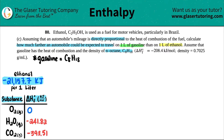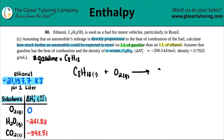We have to start from the beginning and do the same process for gasoline, C8H18. First, find the ΔH of combustion by writing a balanced equation. So: C8H18 liquid plus O2 gas forms the combustion products CO2 gas and H2O gas.